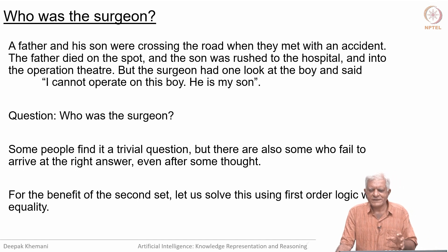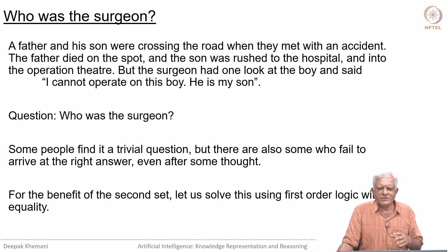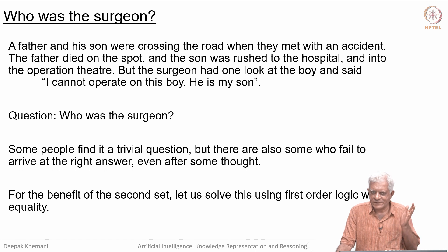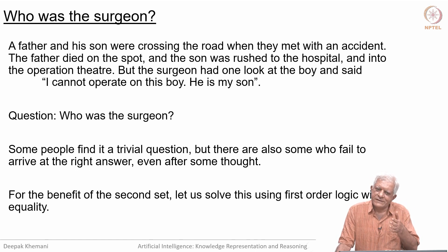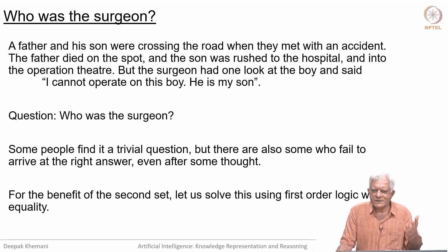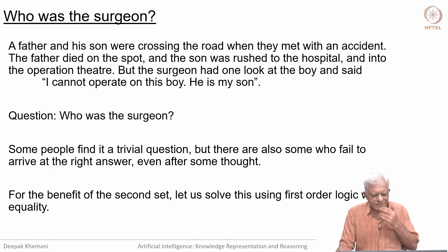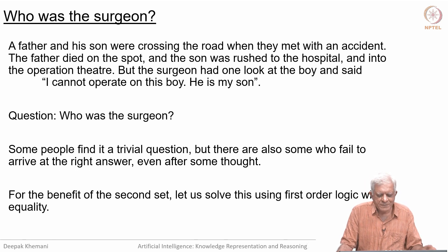We will look at representation a little bit later, but you know things like: if x is a child of y, then y is a parent of x. These kinds of relations we can capture in logic — for all x, child(x, y) is equivalent to parent(y, x). We can introduce other relations: mother, father, sister, brother, and so on. Here the surgeon is saying 'he is my son,' so what do you infer from that?